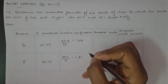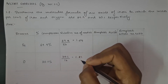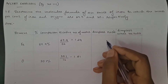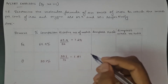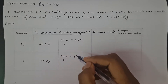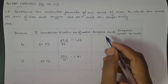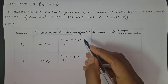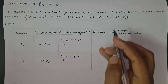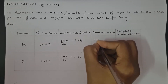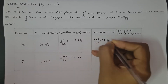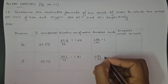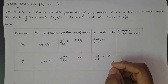Now we have to find out the simplest ratio. We look at which is the lowest number among these — 1.24 or 1.81. We can see that 1.24 is lesser than 1.81. To find the simplest ratio, we divide the relative number of moles of each element by the lowest number, which is 1.24. So for Fe: 1.24 / 1.24 = 1, and for oxygen: 1.81 / 1.24 = 1.5.